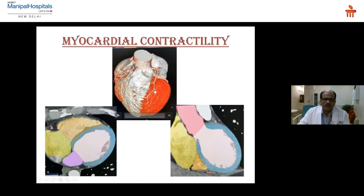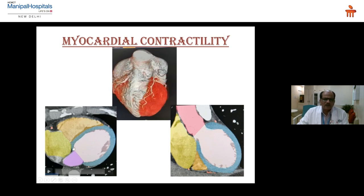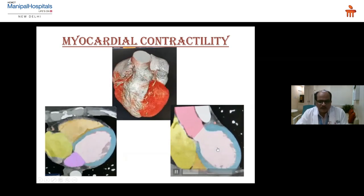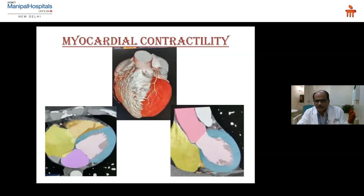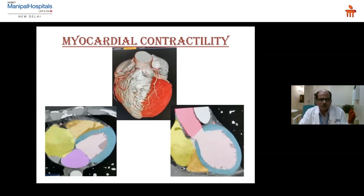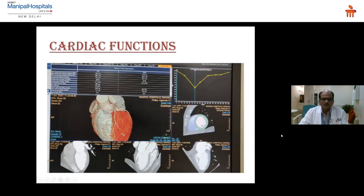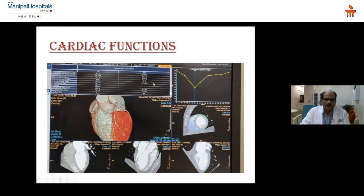This shows how we can see myocardial contractility — it's amazing, everything can be assessed. Measurement of various volumetric parameters — stroke volume, ejection fractions, left ventricular and right ventricular volumes, muscle mass — everything can be done and comes graphically once performed properly.